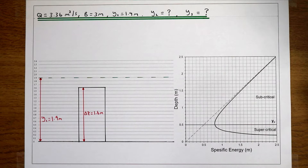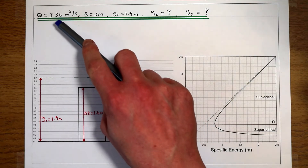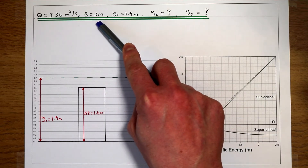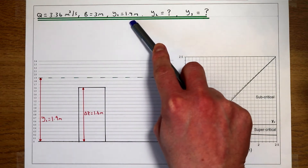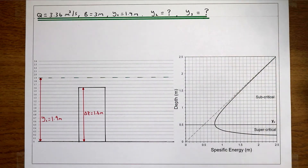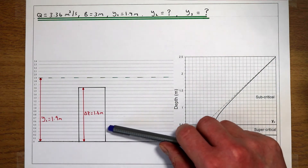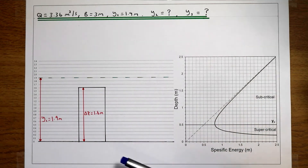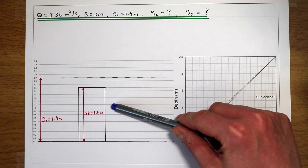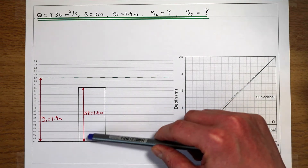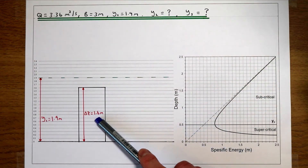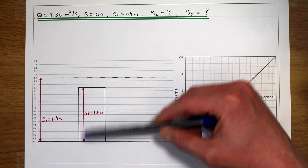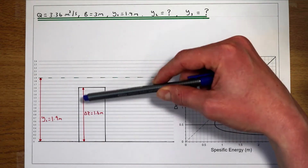This video is following on from the last two videos, where we've got a river with a flow rate of 3.36 metres cubed per second, the river is 3 metres wide and the initial flow depth is 1.9 metres. In the first video we looked at a small bump of 0.3 metres. In the last video we looked at a larger bump of 1.1 metres, and now we're going to look at what happens if we have an even larger obstruction that's 1.6 metres high — a significant portion of the initial flow depth.